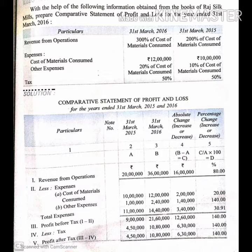Additional information: Revenue from operations is 300% of cost of material consumed for 2016, and 200% of cost of material consumed for 2015. Expenses: cost of material consumed in 2016 is Rs. 12 lakhs, in 2015 is Rs. 10 lakhs. Other expenses: 20% of cost of material consumed in 2016, and 10% of cost of material consumed in 2015. Tax rate for both years is 50%.